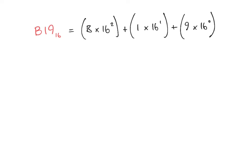B corresponds with 11, so we have 11 × 16² which gives us 2816. Then 1 × 16¹ is 16. And 9 × 16⁰ — anything to the power zero is 1 — so that's just 9. Adding those together: 2816 + 16 + 9 = 2841, and that's our decimal number, 2841 base 10.